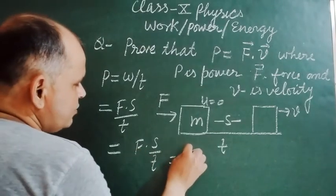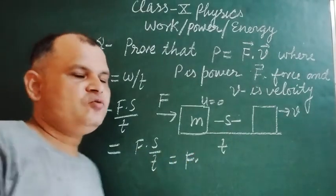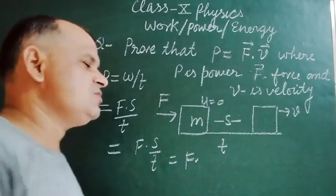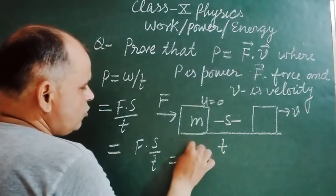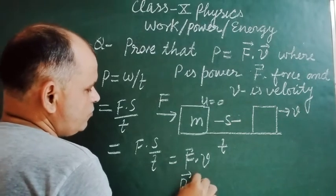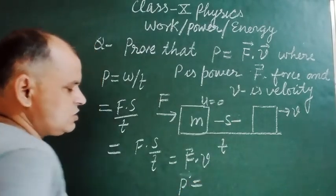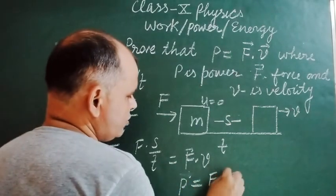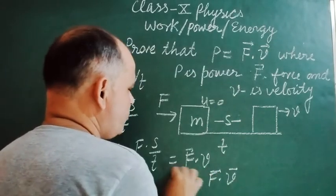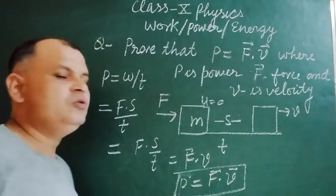And what is S over T? S over T, the rate of change of displacement is called velocity. So here students we get P equal to, P is a scalar quantity, so F into V. So power equal to force into velocity.